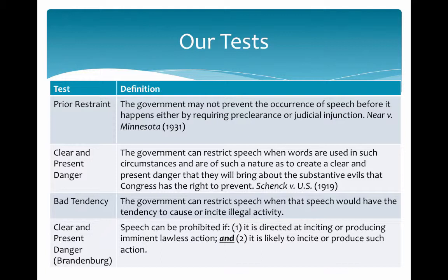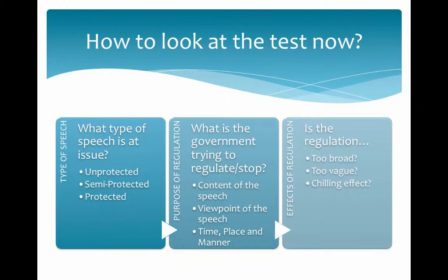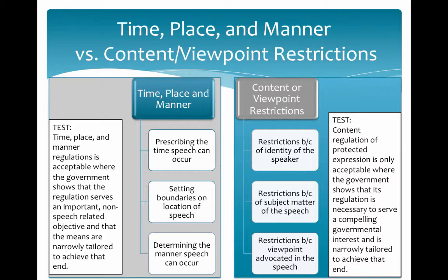We need to go a step further, going back to our three-step process: What type of speech is at issue? What is the government trying to regulate or stop? And what are the effects of the regulation? For tests dealing with time, place, and manner, it's a rational basis test — the government just needs to be doing something legitimate within its powers. For content or viewpoint restrictions, it's strict scrutiny, where the government interest must be shown to be compelling and necessary.